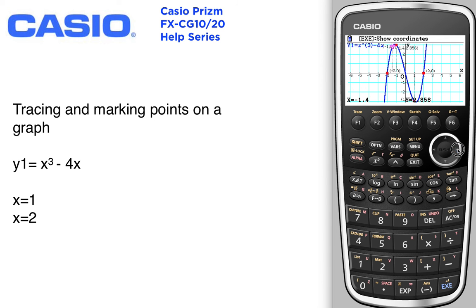While you're still in the trace, you can use the arrow keys to arrow around to where you want to find a value. Once you find a value you like, press execute and it'll drop a point, marking that location and also giving you the coordinates.